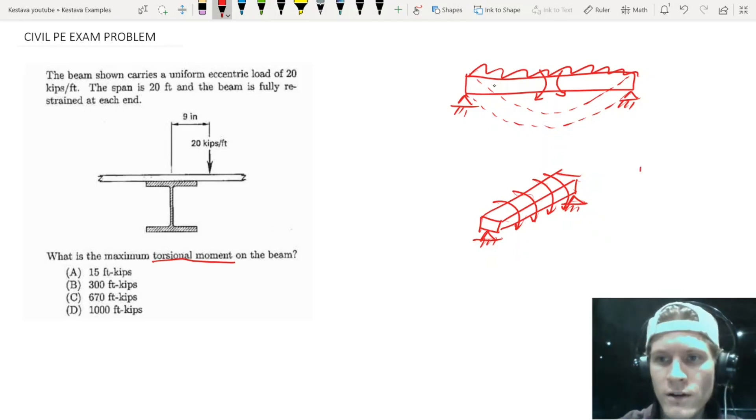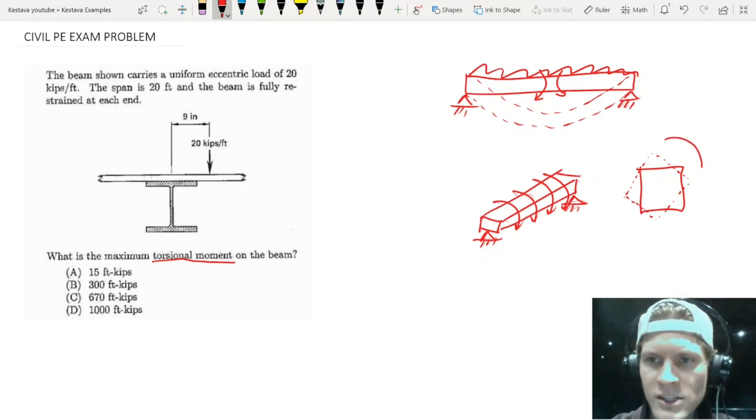And if I were to draw a cross-section, what's happening is you're getting rotation of the section doing something like that. So that's torsion for those that don't know, the quick and dirty of torsion.